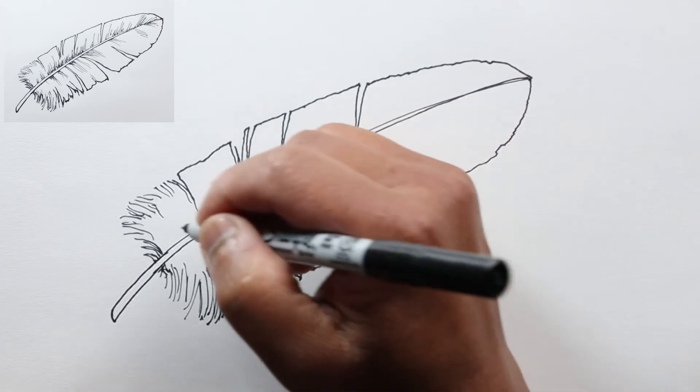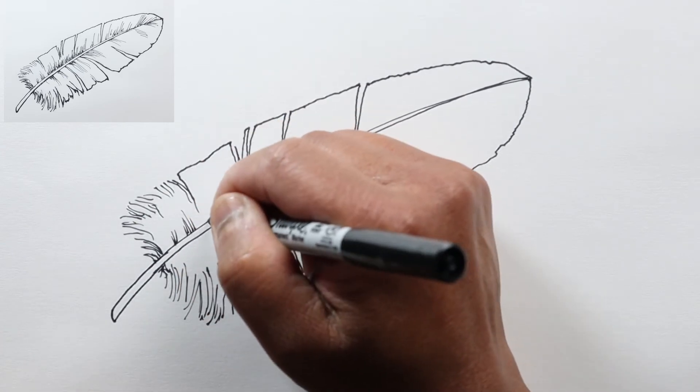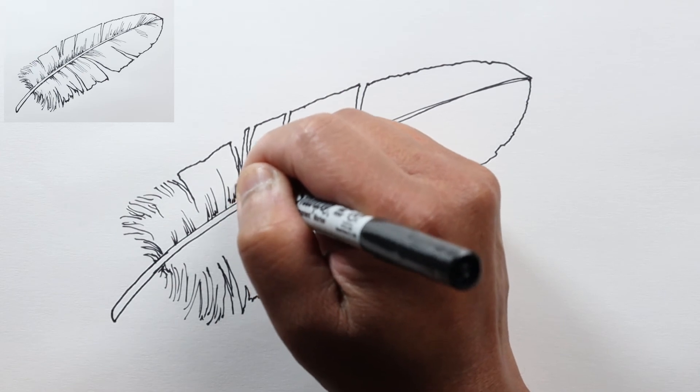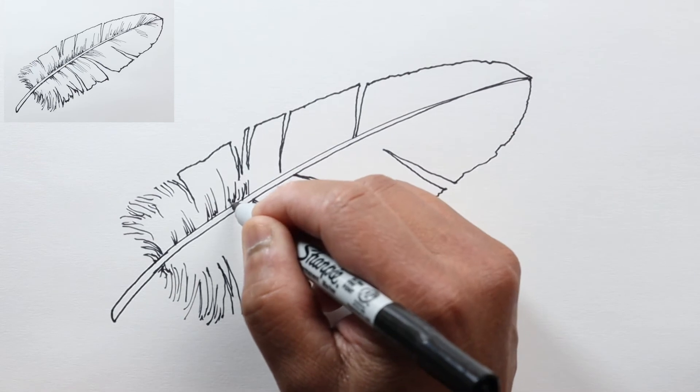Now what we could do is add some shading. And what I'll do here is I'll just add some lines coming off of the rachis from the center line, just to show the direction of the barbs and add some shading closer to the rachis here—or the shaft. Sometimes it's also called the shaft. So I'll just add some shading, just parallel lines.